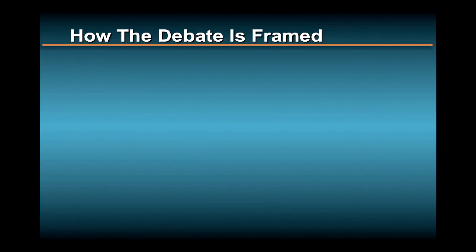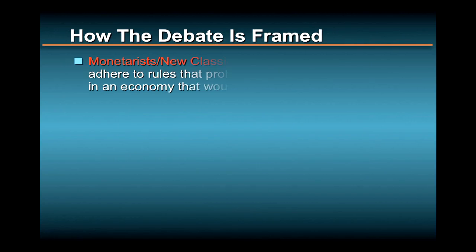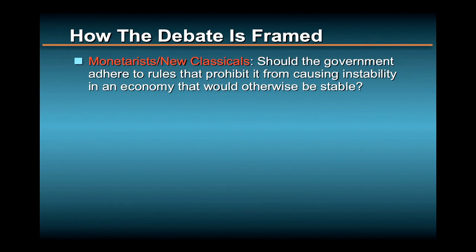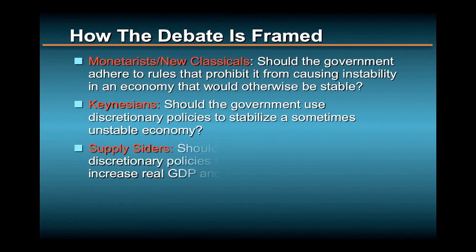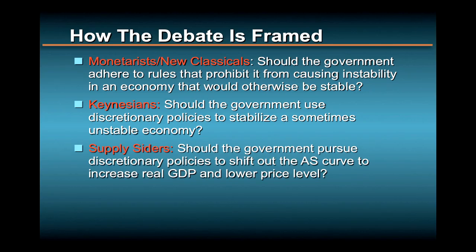Here is how the debate is often framed. From the monetarist and new classical perspective, should the government adhere to policy rules which prohibit it from causing instability in an economy that would otherwise be stable? From the Keynesian view, should the government use discretionary fiscal and monetary policy when needed to stabilize a sometimes unstable economy? And from the supply-side view, should the government pursue discretionary policies to increase aggregate supply as a way of increasing output and reducing inflationary pressures?